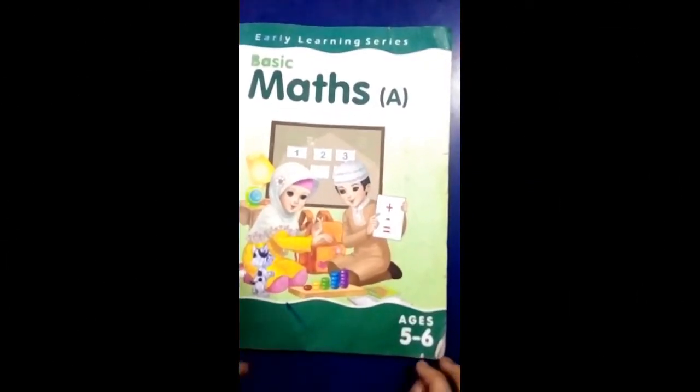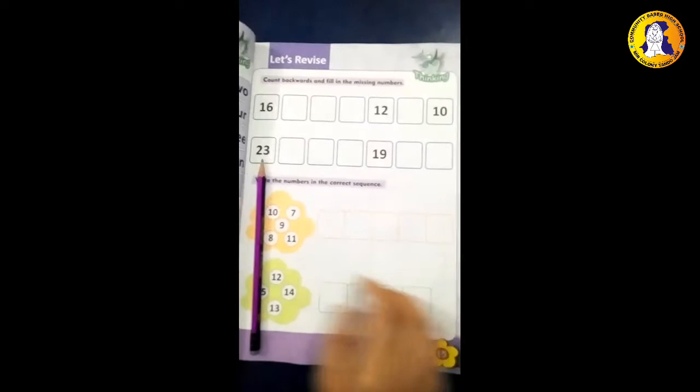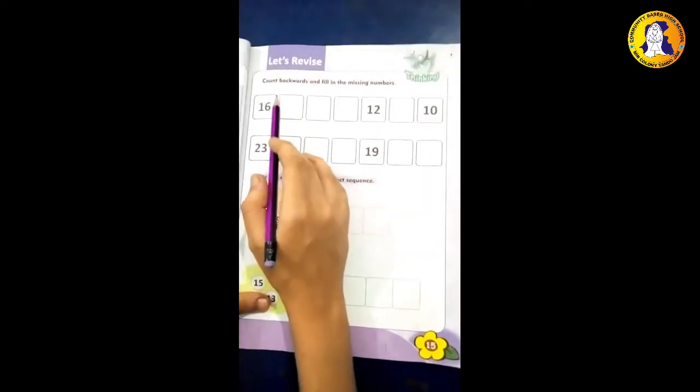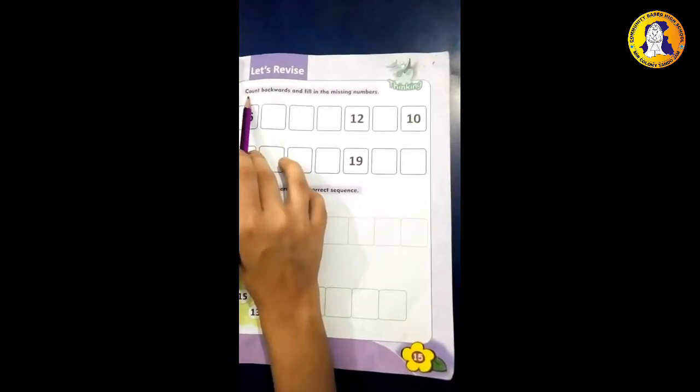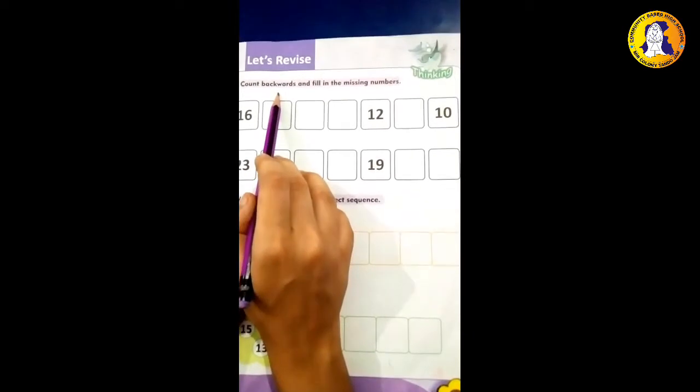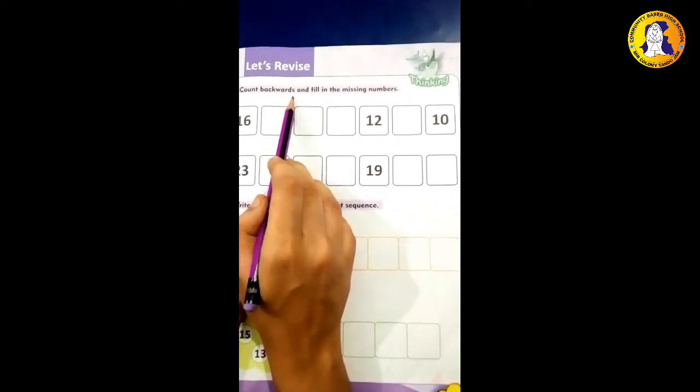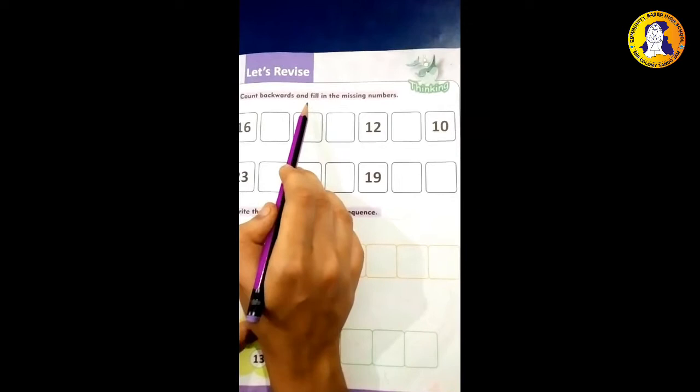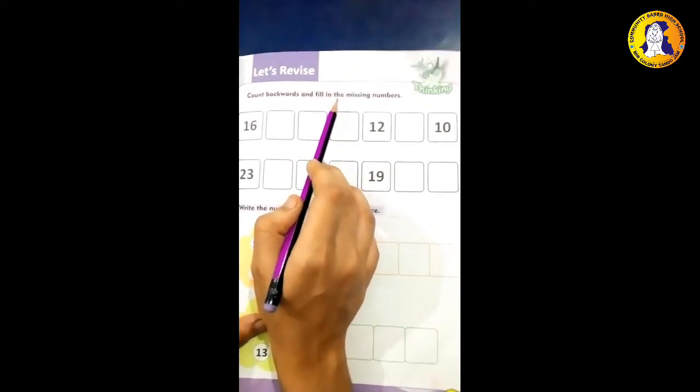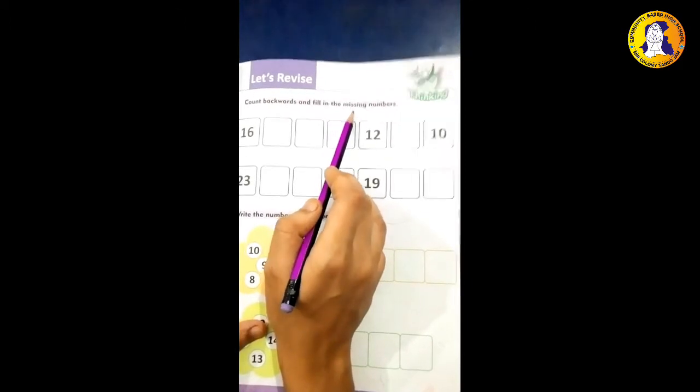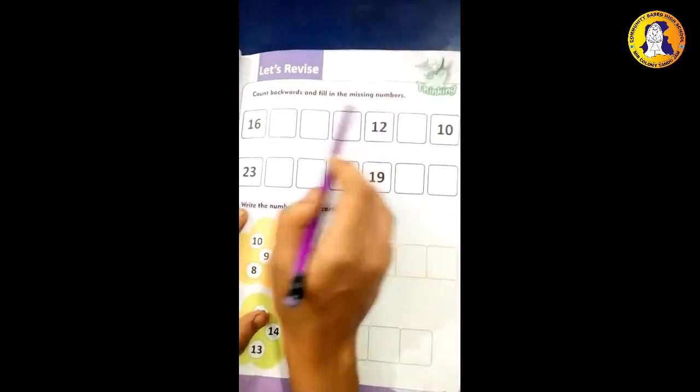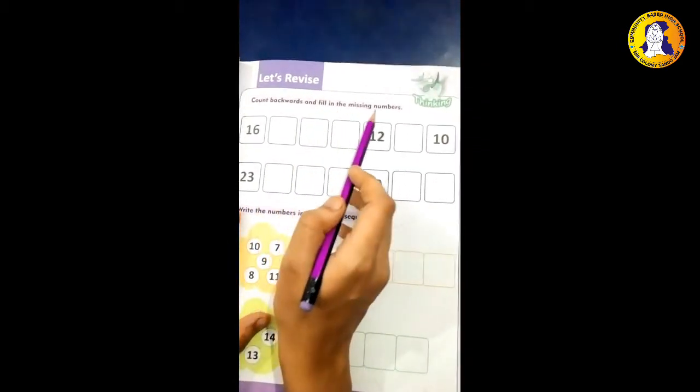Today we introduce subject math, page number 15. Read with me: count backwards and fill in the missing numbers. C-O-U-N-T count, B-A-C-K-W-A-R-D-S backwards, A-N-D and, F-I-L-L fill, I-N in, T-H-E the, M-I-S-S-I-N-G missing, N-U-M-B-E-R-S numbers. Count backwards and fill in the missing numbers.